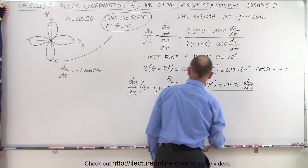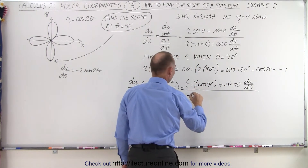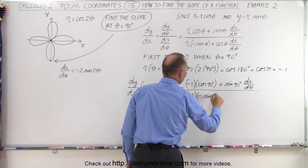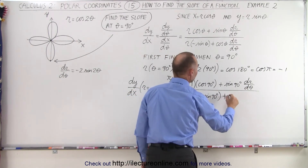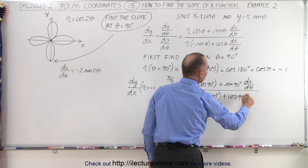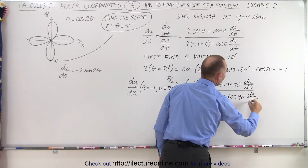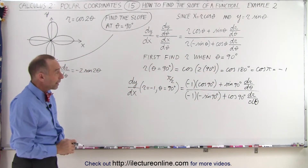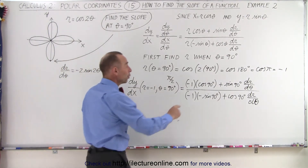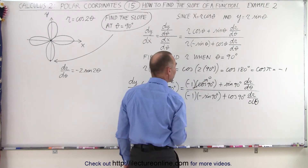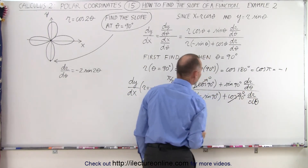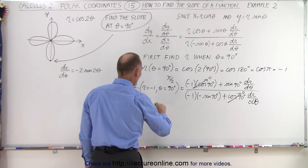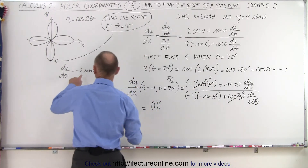Dividing by the denominator: we get r, which is negative 1, times the negative sine of 90 degrees — so minus the sine of 90 degrees — plus the cosine of 90 degrees times dr/dθ. Now let's simplify by eliminating anything that goes to 0. The cosine of 90 degrees is 0, so those terms disappear, leaving the sine of 90 — which is 1 — times dr/dθ.